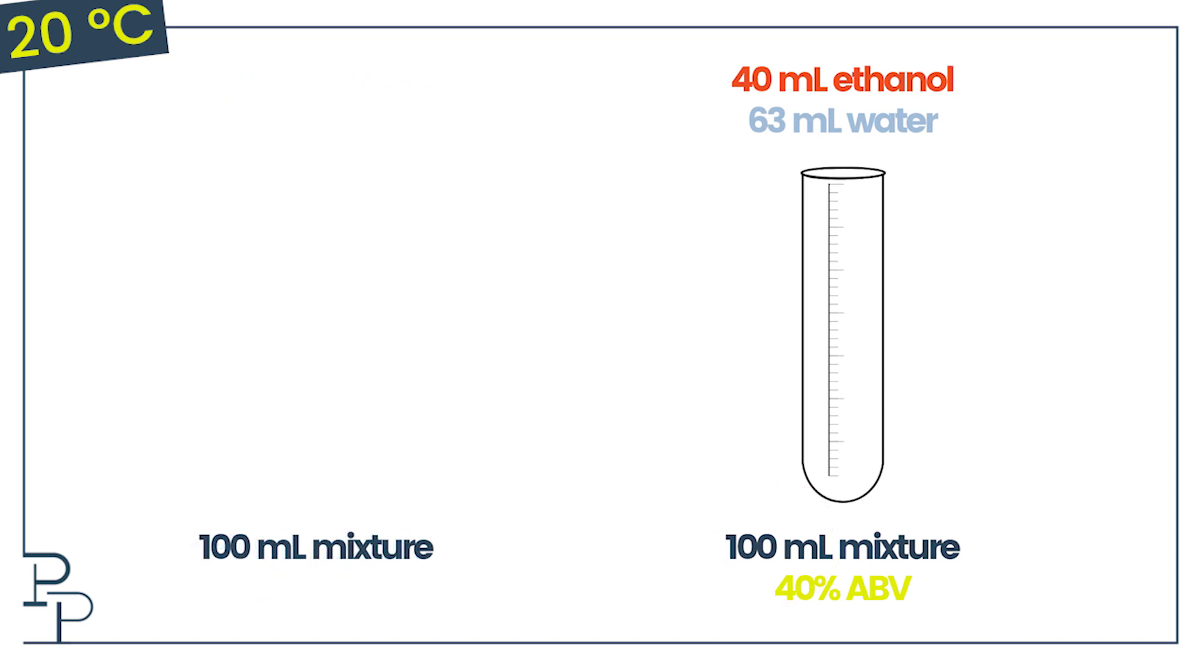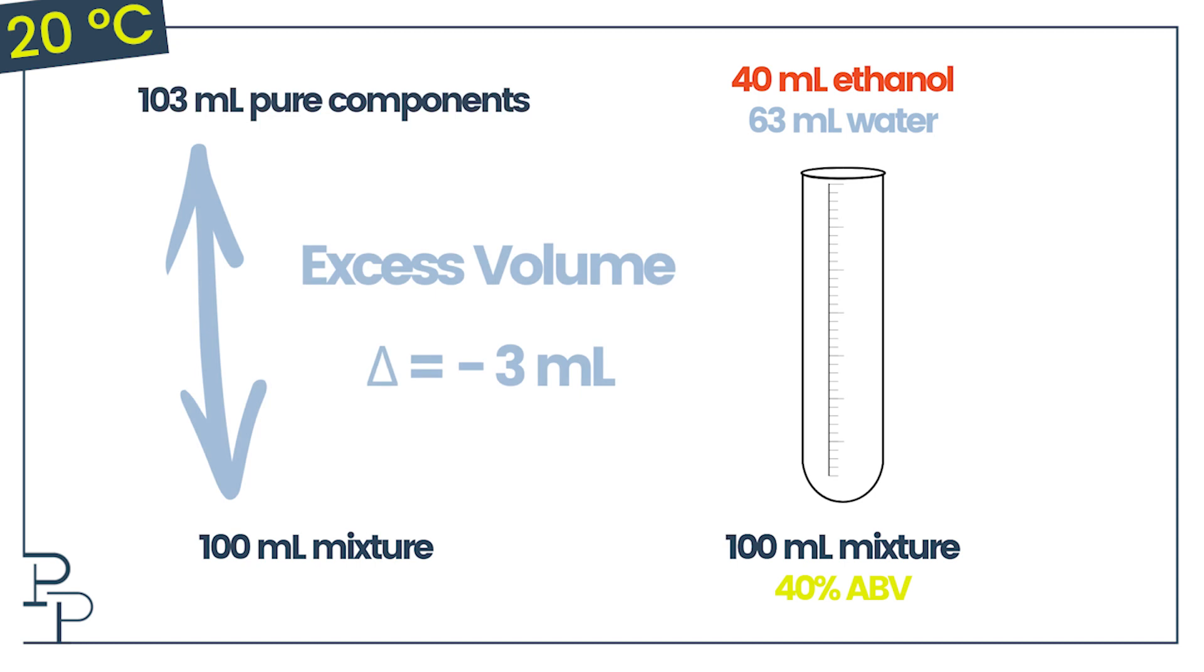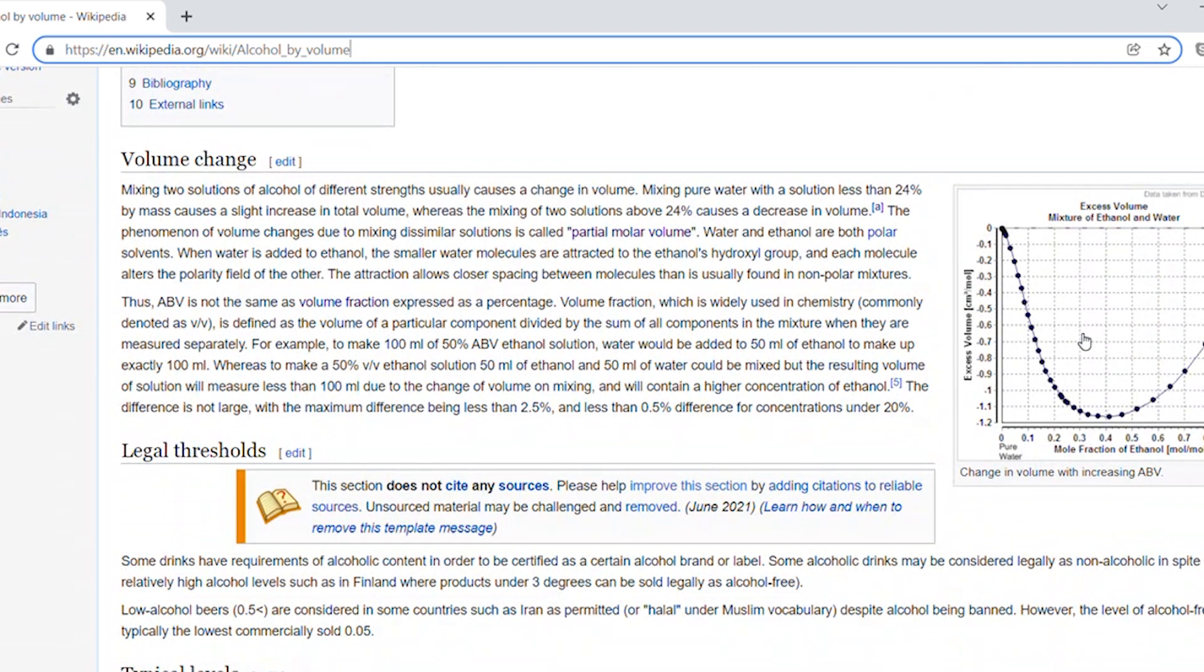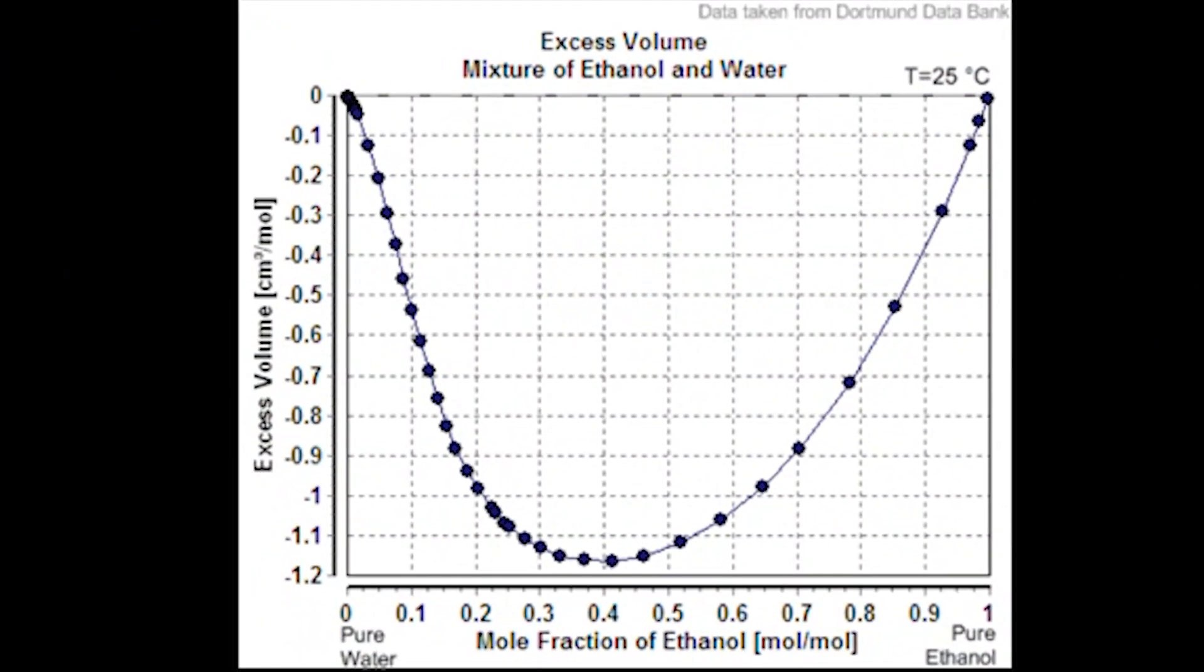The degree to which the mixture volume deviates from the sum of the pure component volumes, in chemical thermodynamics is known as an excess property. And the amount of the deviation is not constant either. It's a function of the relative amounts of the individual components. These excess properties need to be quantified by doing lab work. For the ethanol water system, you can find the data on Wikipedia where someone has uploaded data from the Dortmund databank.